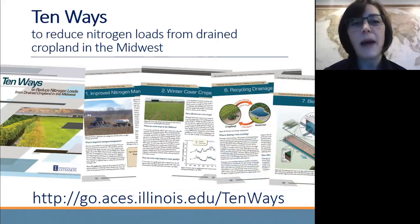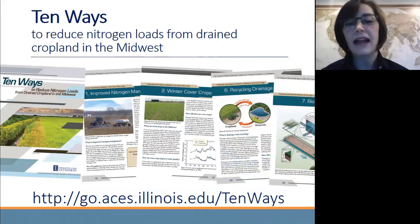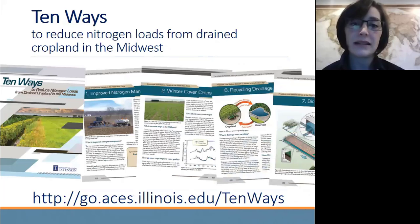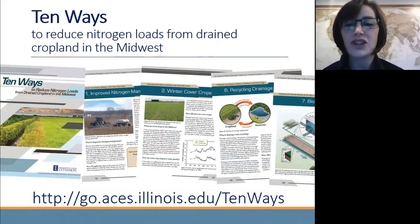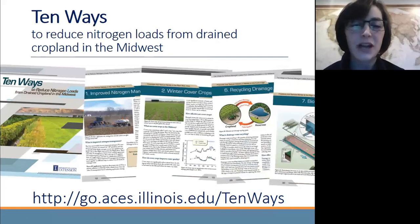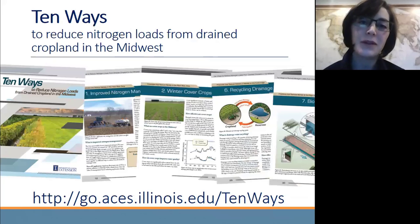So with that, I'll wrap up. I'll just highlight again that this booklet — the 10 Ways to Reduce Nitrogen Loads from Drained Cropland in the Midwest — is already available online. The link is there at the bottom of the screen. You could also Google '10 ways drainage' or my name, or feel free to send me an email if you're interested and I'll point you in the right direction. Thanks again for tuning in.